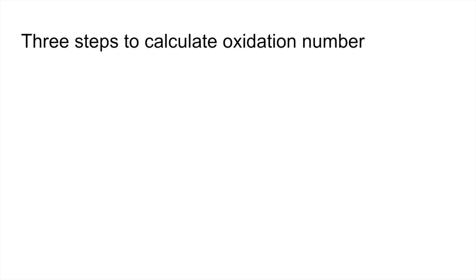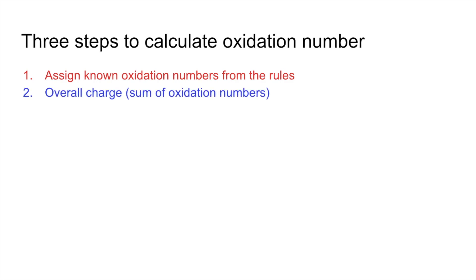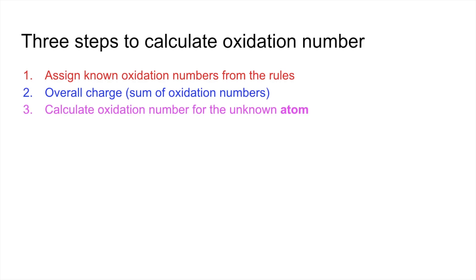There are three steps to calculate oxidation number. Step one: assign known oxidation numbers from the rules. Step two: consider the overall charge, remembering that it must equal the sum of all oxidation numbers. Step three: calculate the oxidation number for the unknown atom.